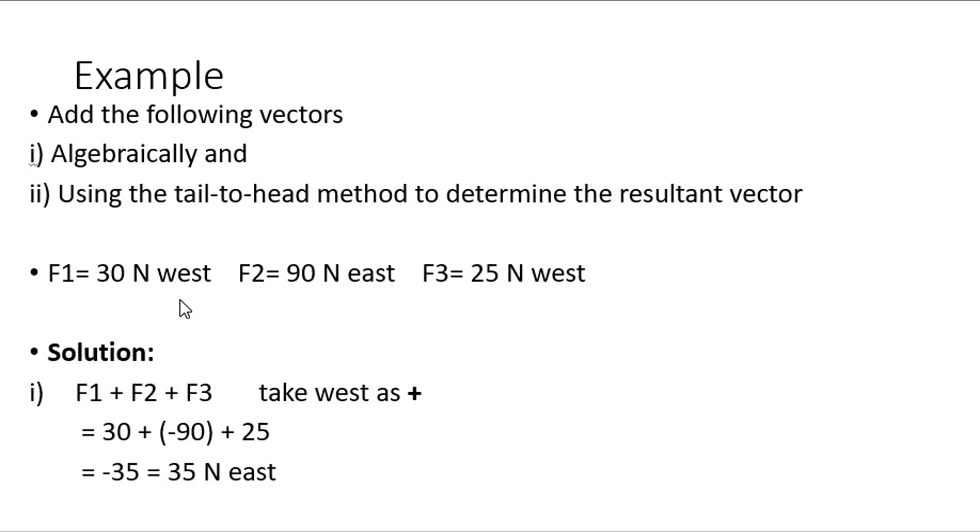Let's take a look at an example. Add the following vectors: F1 equals 30 newtons west, F2 90 newtons east, and F3 25 newtons west. First, they want us to use the algebraic method, which is very simple. We write it as our formula and take in our direction. There's two west and one east, so it's easier to take west as positive and east as negative. F net equals F1 plus F2 plus F3, which gives us 30 plus negative 90 plus 25, giving an answer of negative 35. When we see negative, we know that's in an easterly direction, so we state our final answer as 35 newtons east.